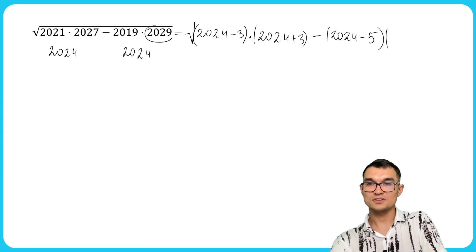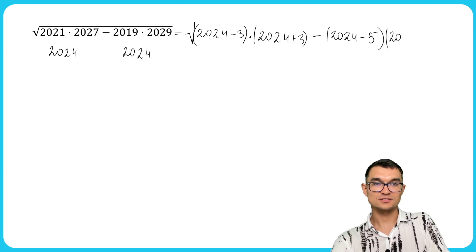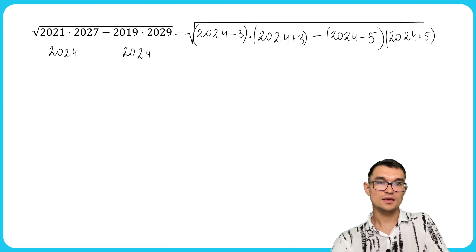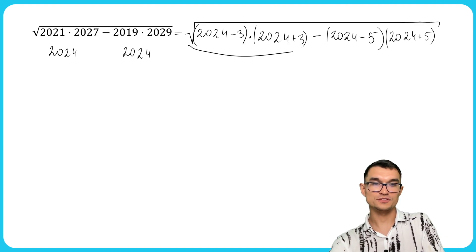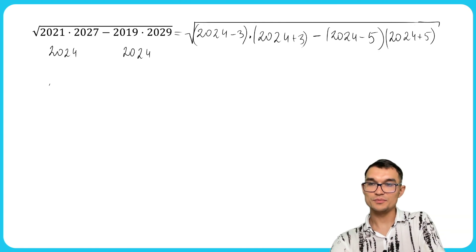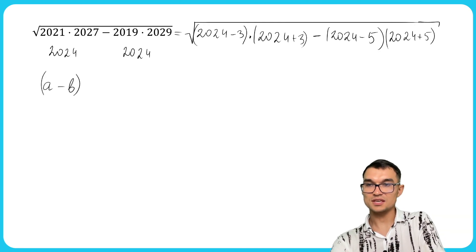And this 2029 is 2024 plus 5. And now we just have two formulas of a difference of squares. Let me remind you that A minus B times A plus B equals A squared minus B squared.